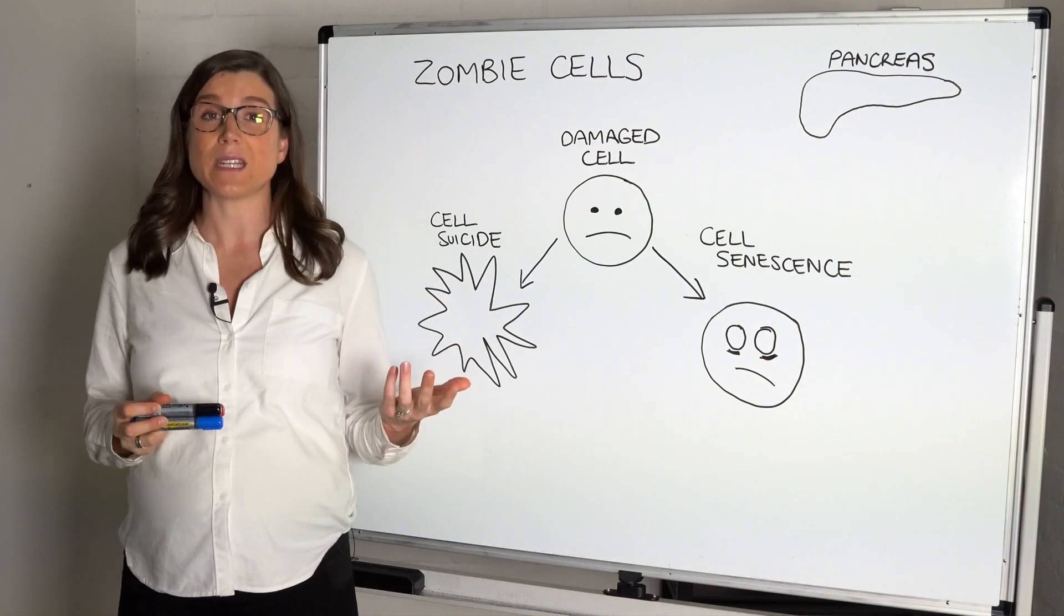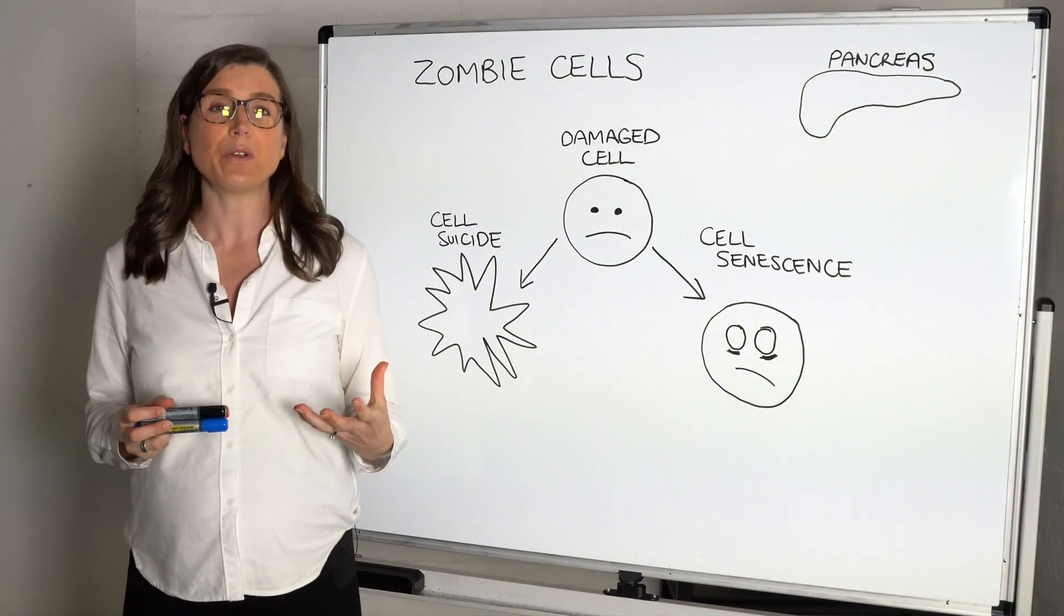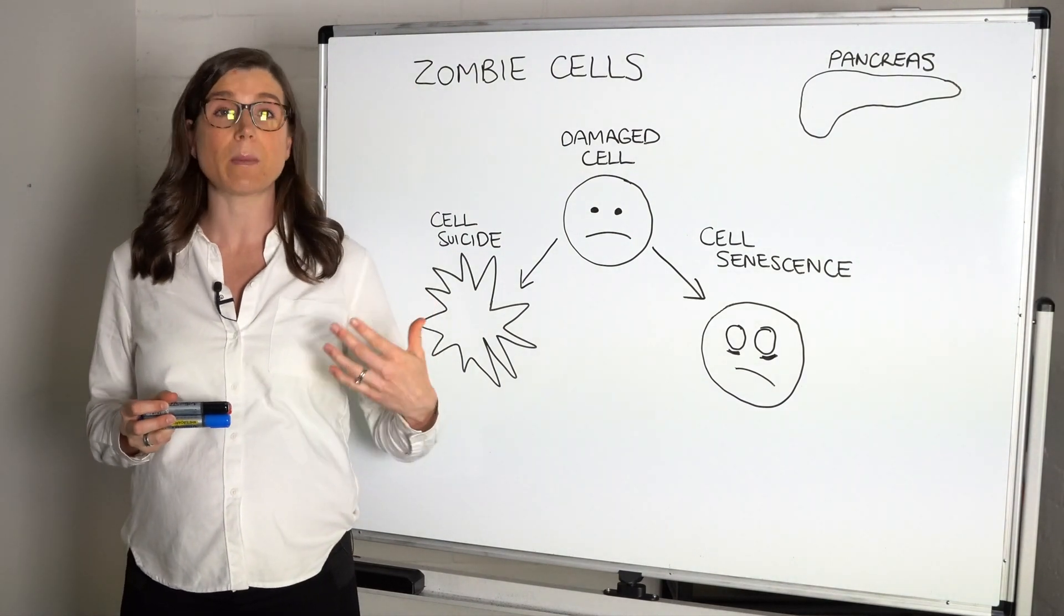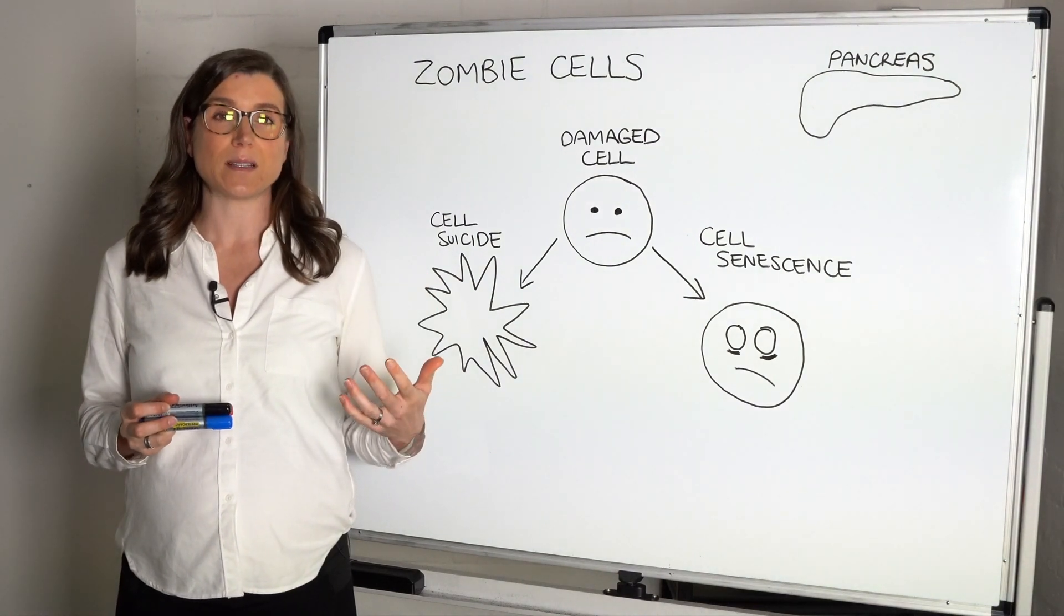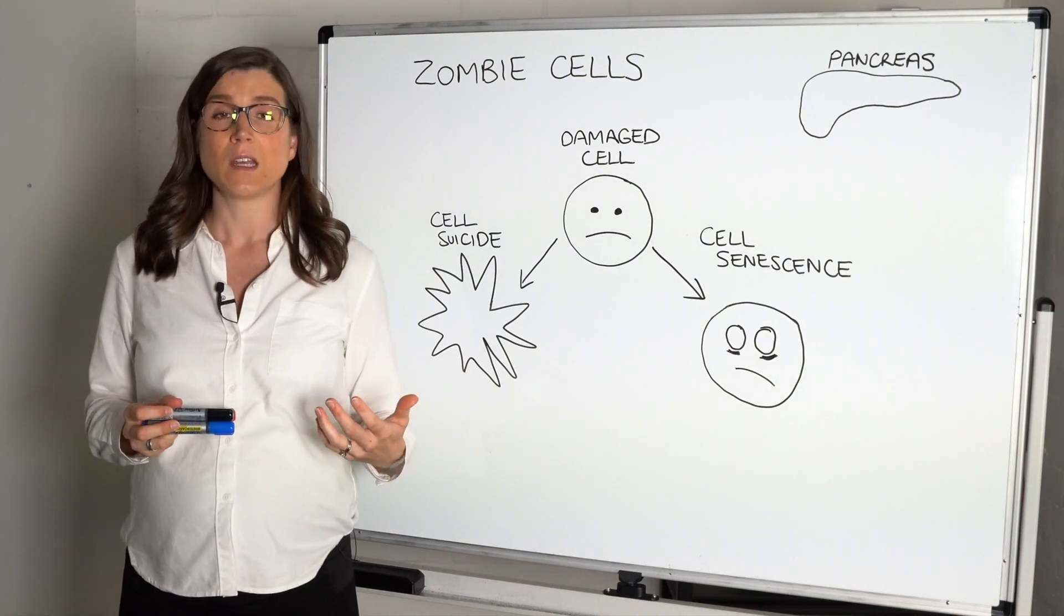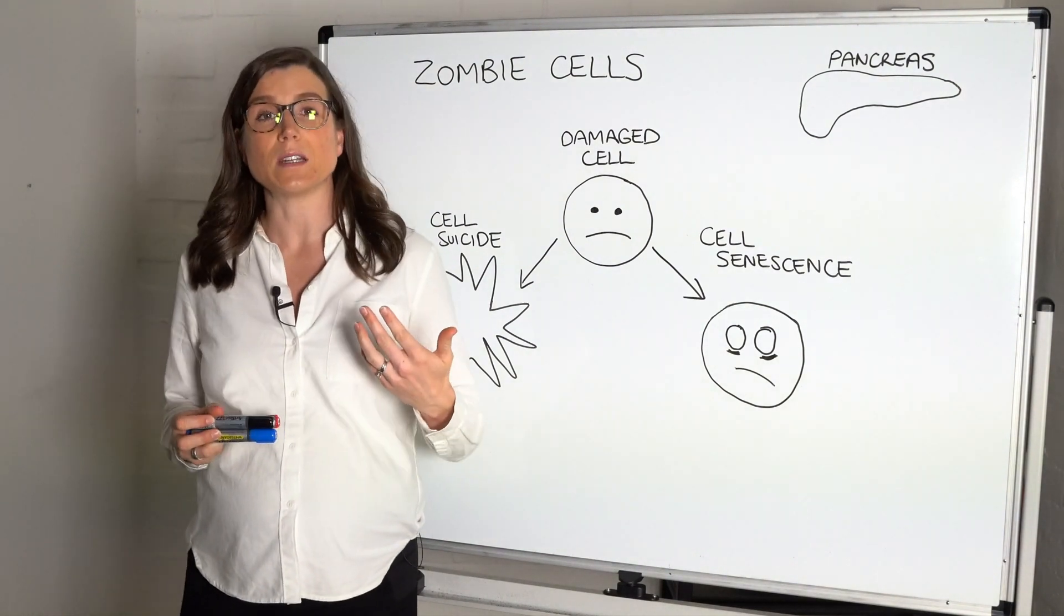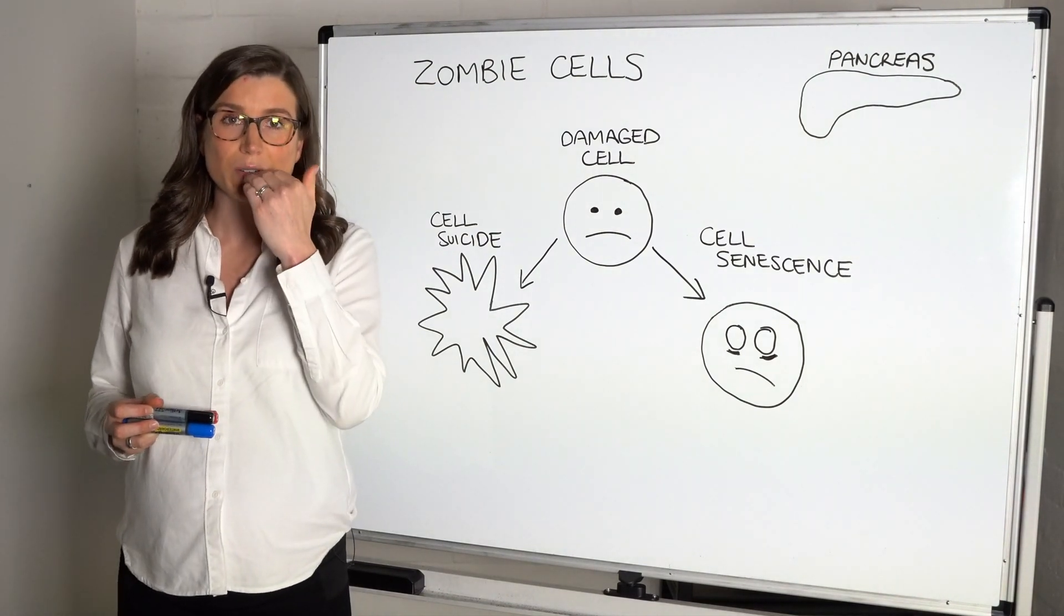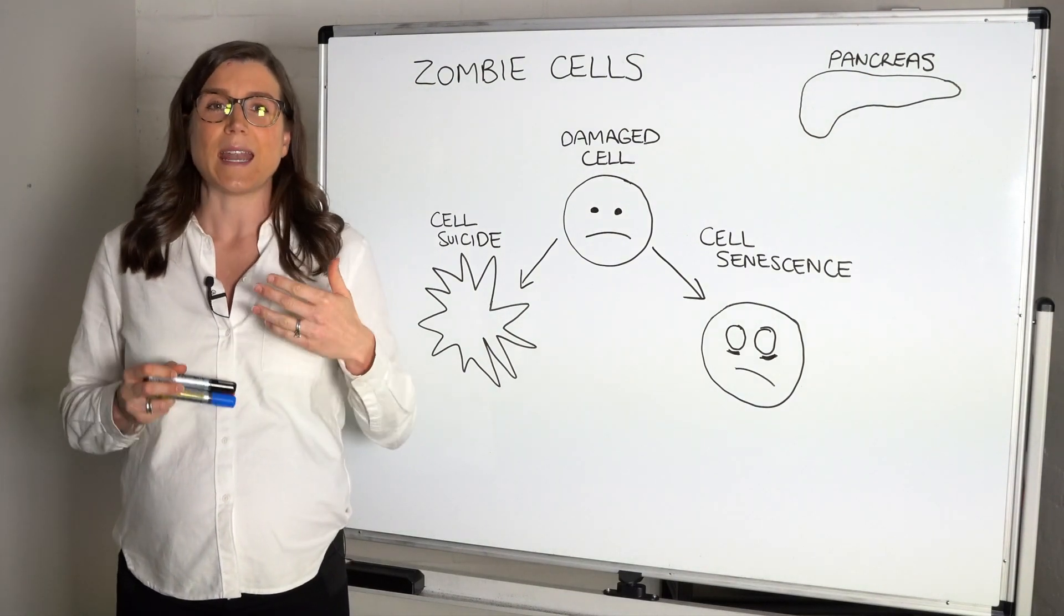Cells will continually replicate themselves or make copies of themselves to make new cells. In some tissues this happens at a very fast rate. For example, in your mouth and your gastrointestinal tract, this is happening at a very fast rate. So you might notice when you wake up in the morning that you've got a lot of scum in your mouth or on your lips, and that's because the cells are turning over—they're copying themselves and making new cells.